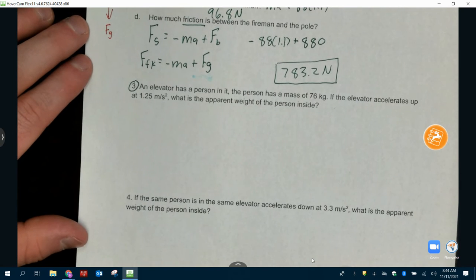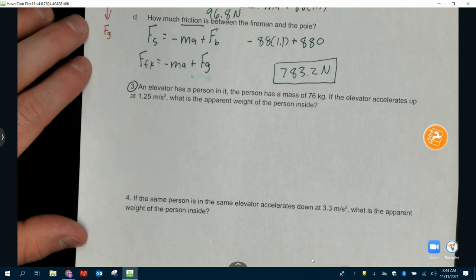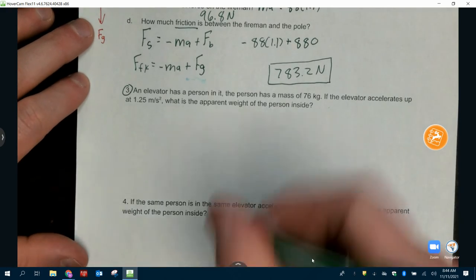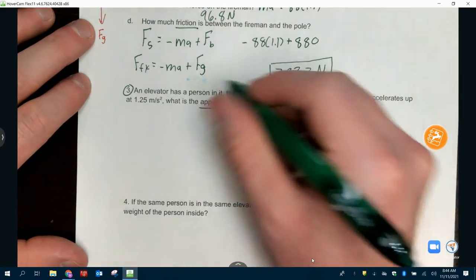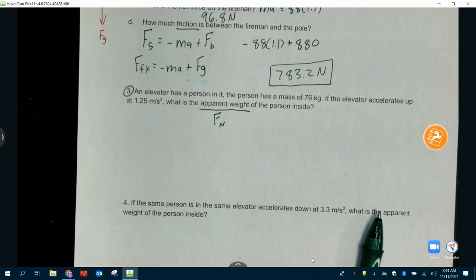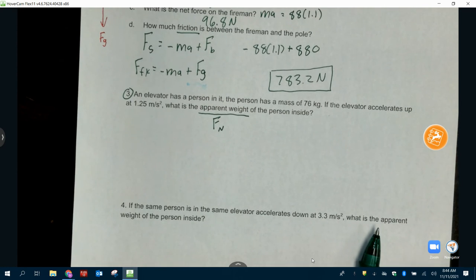Number three. An elevator has a person in it. The person has a mass of 76 kilograms. If the elevator accelerates up at 1.25 meters per second squared, what is the apparent weight of the person inside? Apparent weight is normal force. Apparent weight is not your actual weight. It's how heavy you feel. Now, most of the time, you feel how heavy you actually are. That's a weird statement to me. Right now, you are not accelerating. So, when you're sitting in your desk, your normal force is equal to F_G. They are equal to one another. You feel as heavy as you are.